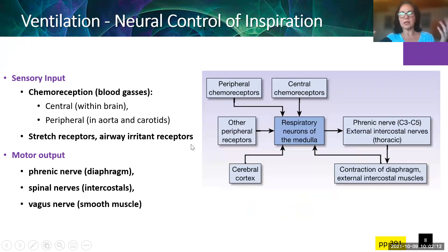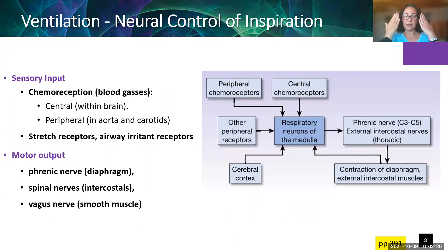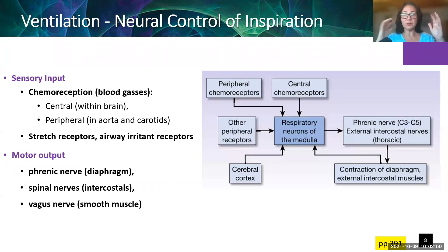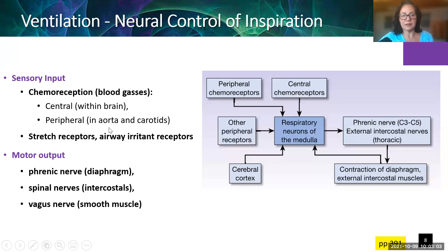Ventilation has neural control. There are two aspects: sensory input — getting messages from the body toward the brain — and motor output from the brain out to the body. The most important sensory input is chemoreception, detecting the blood gases. Central chemoreception is within the brain — our understanding of exactly where these chemoreceptors are is changing, as areas beyond just the medulla seem to be involved. Peripheral chemoreception is anywhere outside the brain, in the aorta and in the carotids.